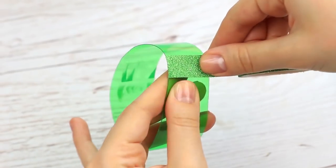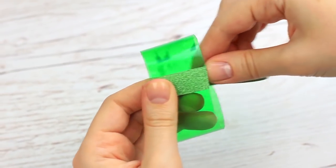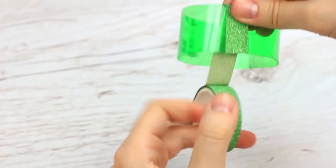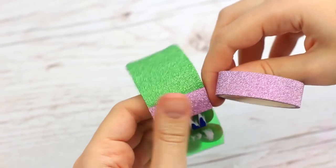Start wrapping the wider bracelet with the sparkly green tape. Continue with the pale lavender one.